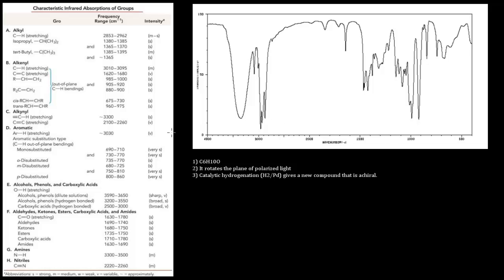The first thing you should always do is look at the molecular formula, because by looking at it you can find out what the structure cannot be. There is only one oxygen, which tells us it cannot be a carboxylic acid or ester — those have two oxygens. There is also no nitrogen, so it can't be a nitrile or amine. That means this oxygen must be either an alcohol, a carbonyl, or an ether.